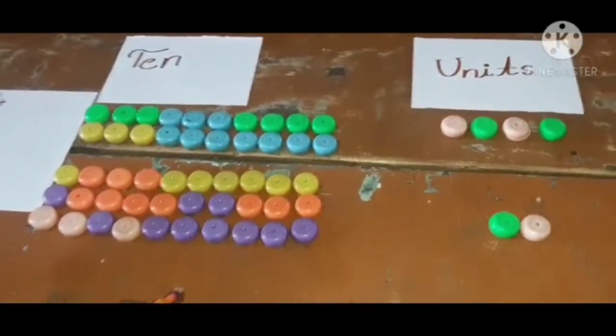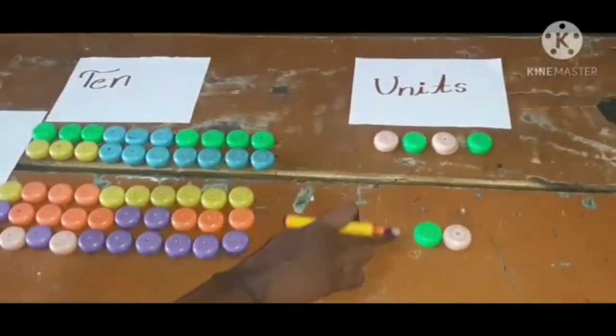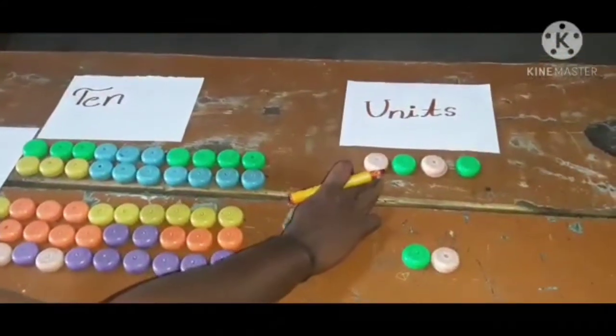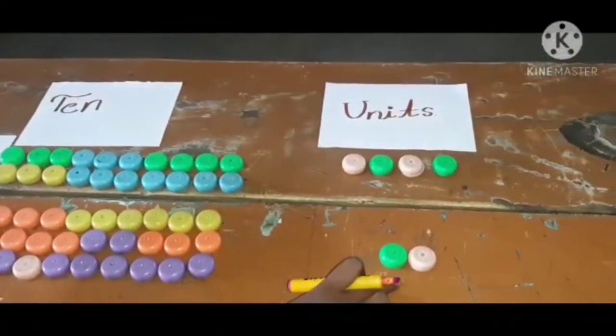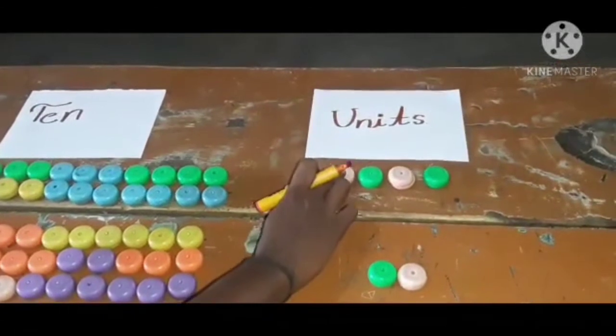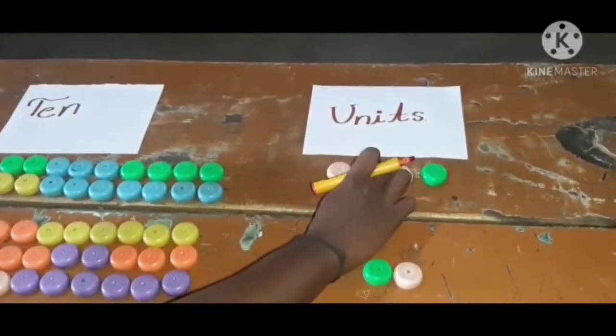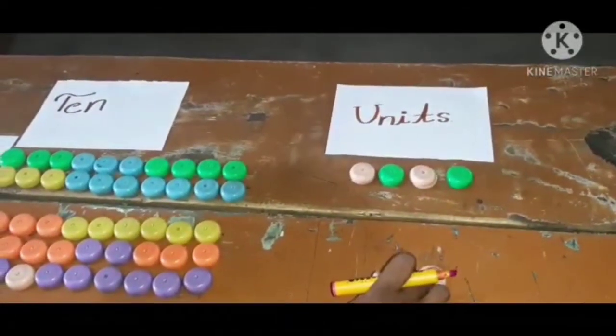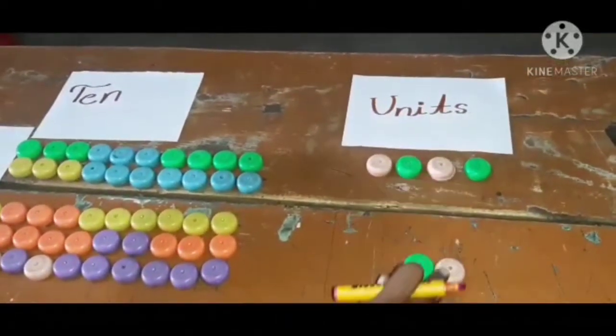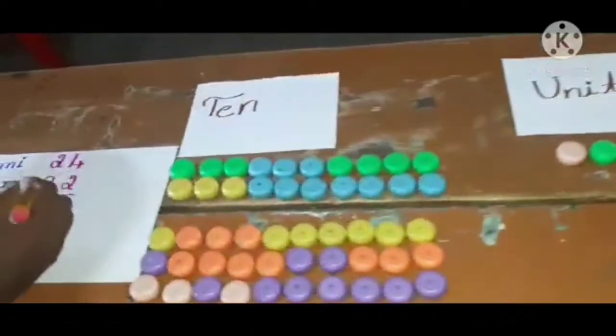Now you can add the numbers. First, you can add units. So in units place, 4 and here 2. Let's count now, 1, 2, 3, 4, 5, 6. So 4 plus 2, 6.